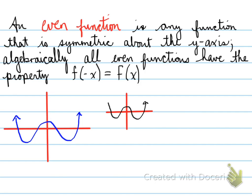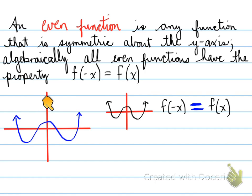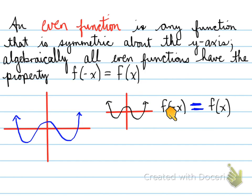Looking at this function, we can see that if I take this blue function and reflect it horizontally, I get the original function again. This graph was reflected horizontally from the blue graph. So if I take f at negative x, which means a horizontal reflection, I will get the original function. When we describe the symmetry, we can say it's an even function because it is symmetric about the y-axis. Reflecting horizontally, we get the original function, so it must be even.